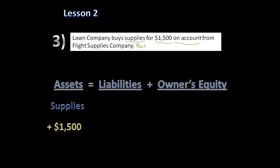Since we received a product without paying, that creates an accounts payable, which is a liability. We didn't owe anybody before, but now we owe $15,000, so accounts payable is increased by $15,000.